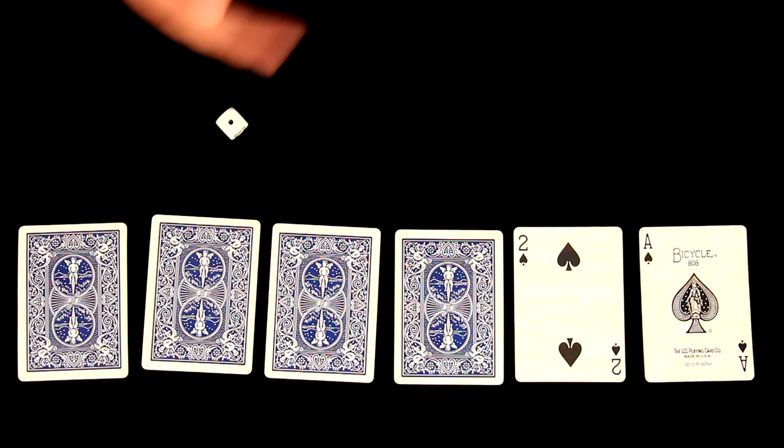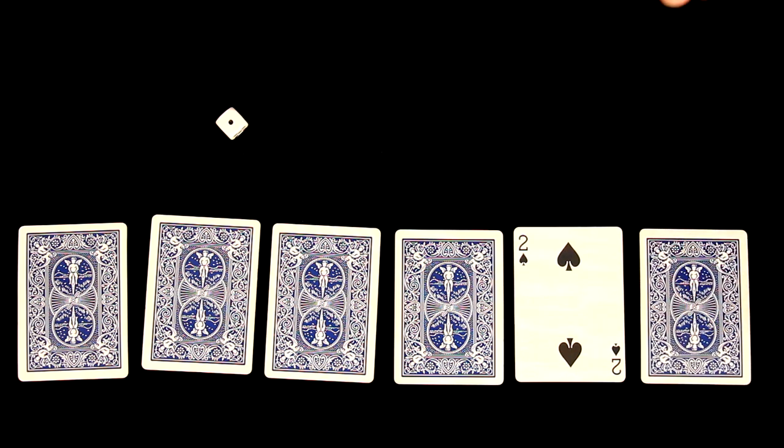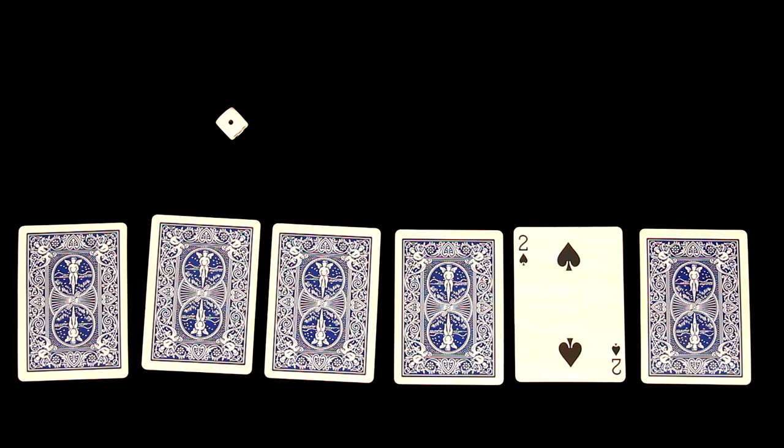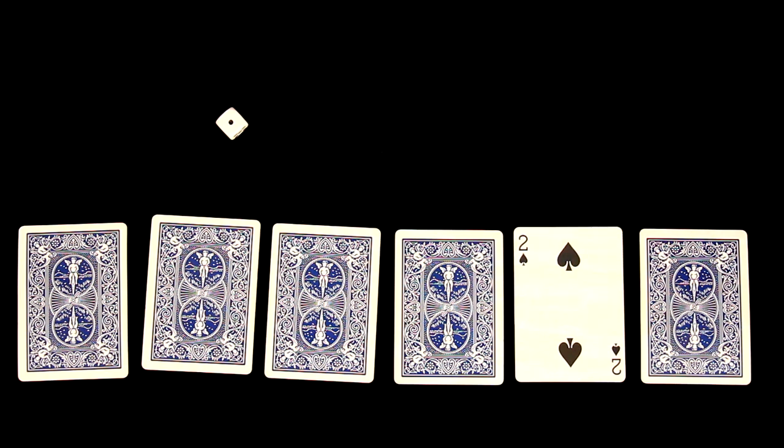So the next is number one. So there is only one card left on the table and that is number two. So I actually predicted the future correctly because I knew in advance that it will be number two as last card left on the table.